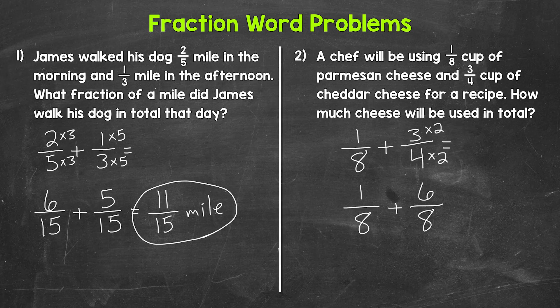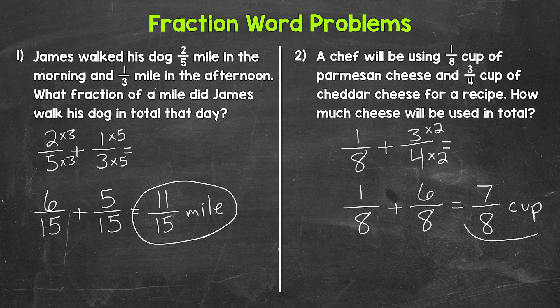Now we have a common denominator, so we can add. Let's add the numerators: one plus six gives us seven, and then we keep the denominator of eight. Our answer here is seven-eighths. Seven-eighths of a cup of cheese will be used for this recipe — that's the total amount of cheese. And seven-eighths is in simplest form, so we do not need to simplify here.